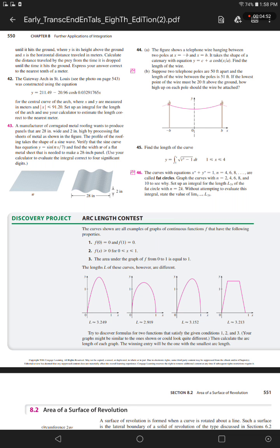The profile of the roofing takes the shape of a sine wave. Verify that the sine curve has equation y equals sine (pi x over 7), and find the width of a flat metal sheet that is needed to make a 28-inch panel. Use your calculator to evaluate the integral correct to four significant digits.